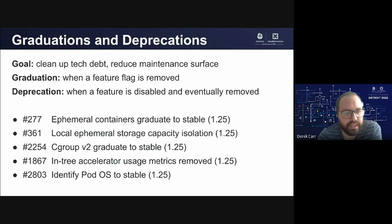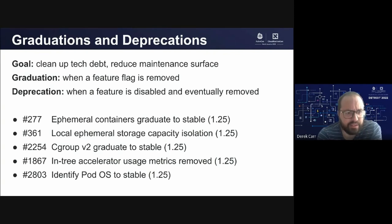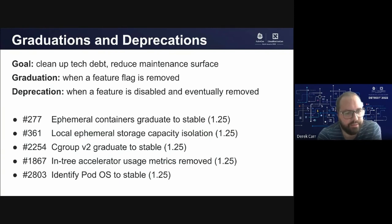Other notable features: ephemeral storage capacity isolation, so you can schedule based on node local storage, graduated to stable. Cgroups V2, which we'll discuss in more detail later, is also stable, so we can better support newer, more modern Linux distributions. The kubelet's ability to advertise GPU accelerator usage metrics has been removed and offloaded to individual GPU device plugins and vendors. And a feature I really appreciate going stable: you can now identify the operating system required by a pod — so if you're running Windows or Linux nodes, you can look at the pod and know which host it should land on.